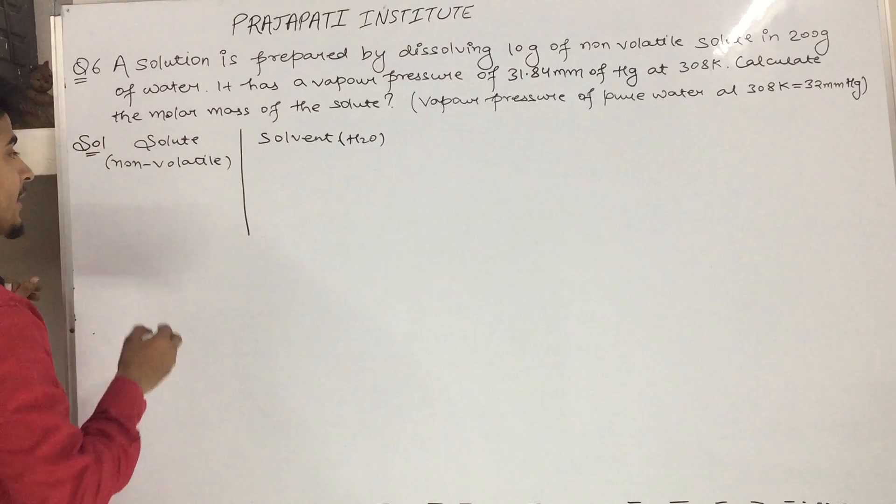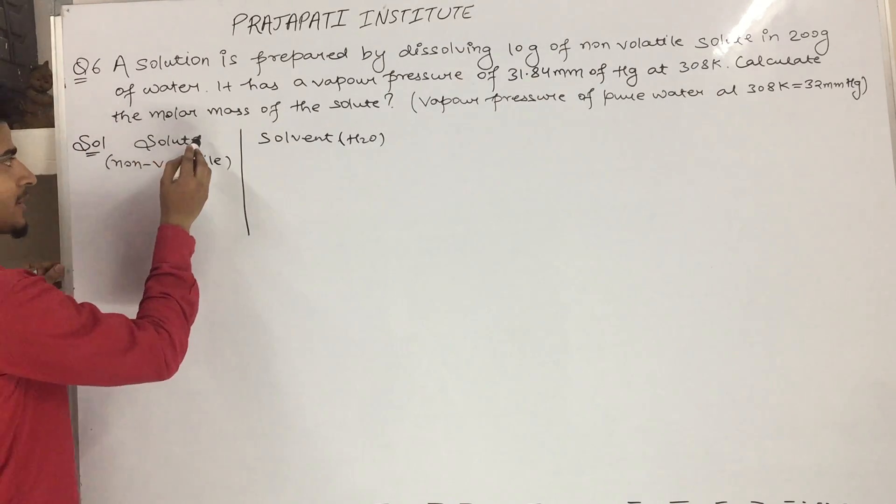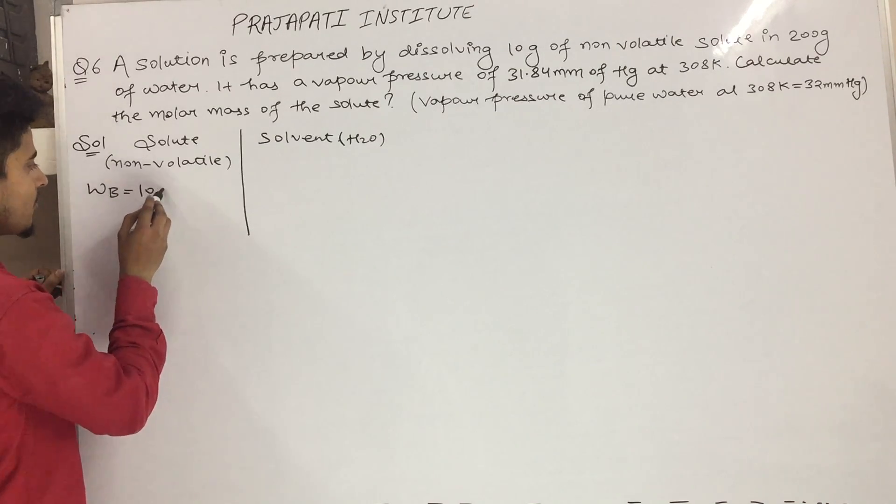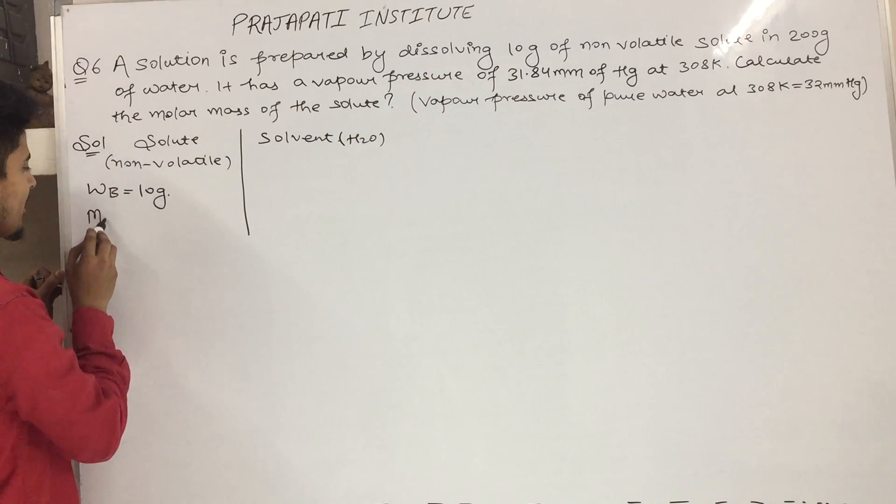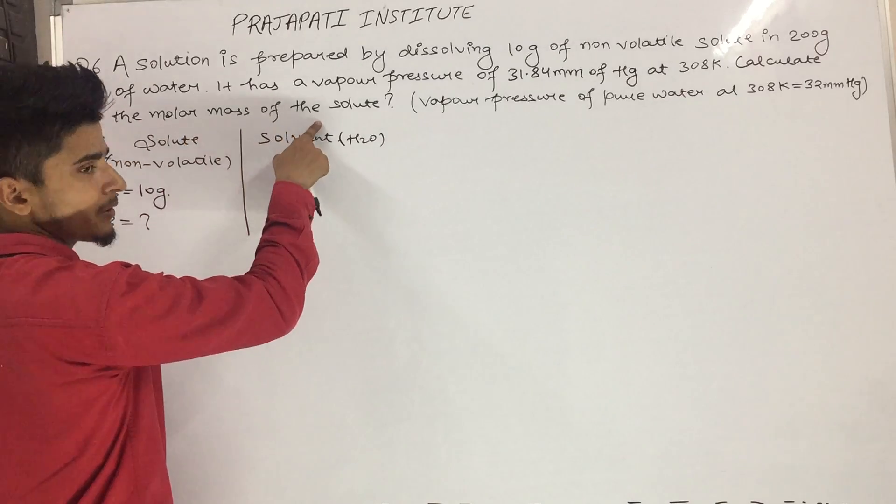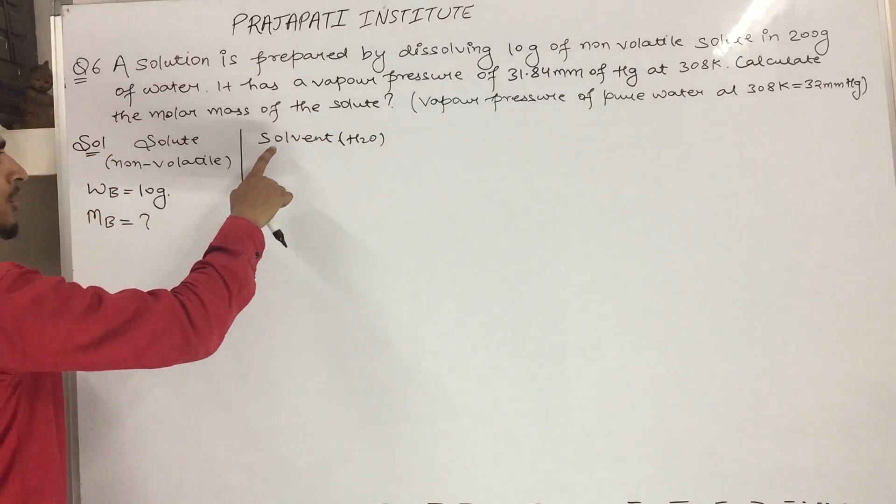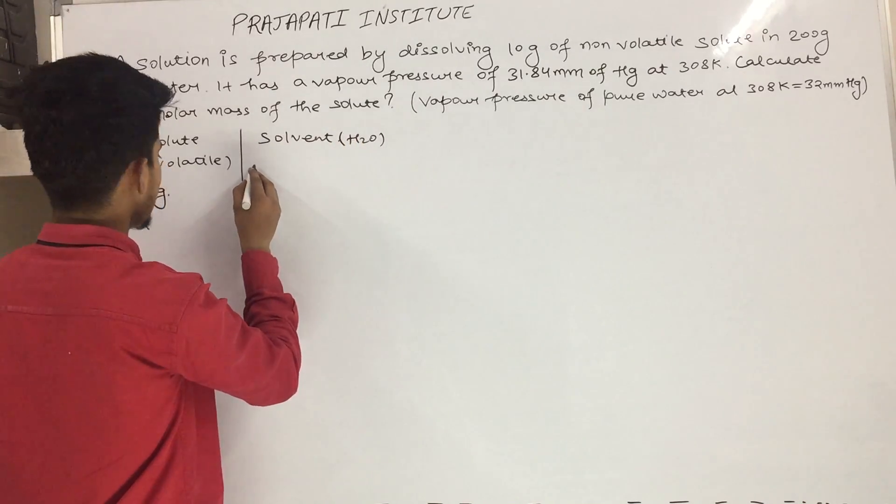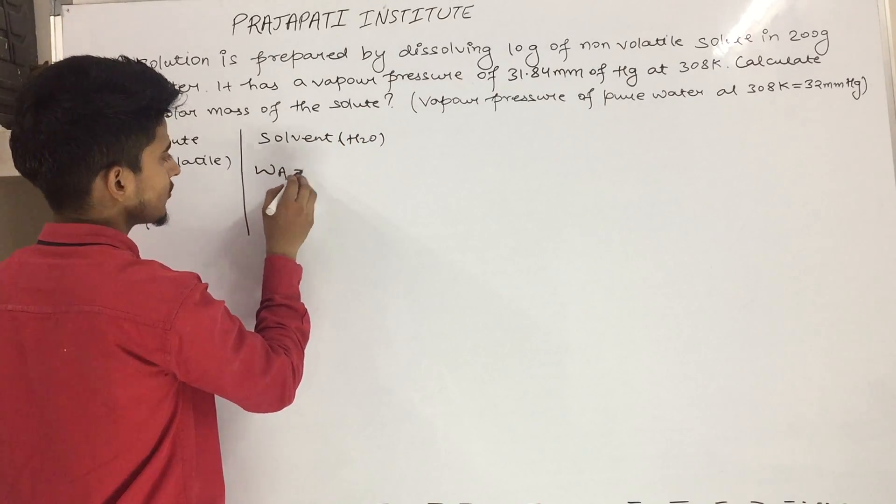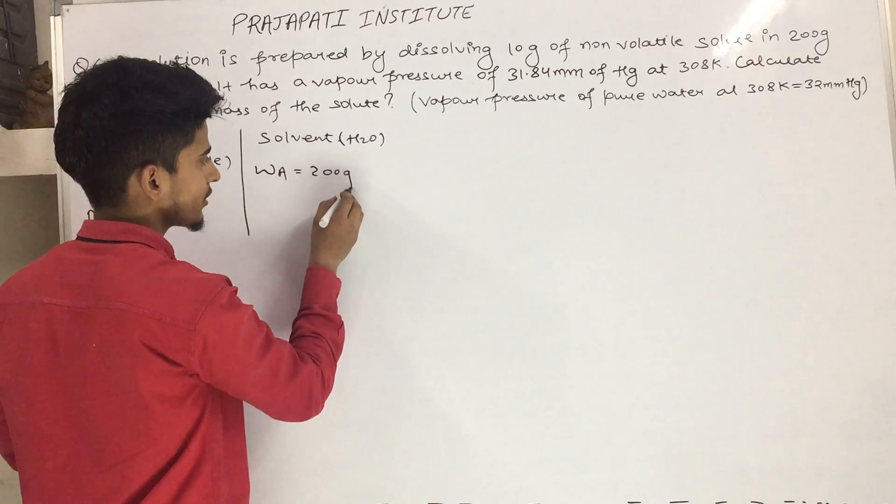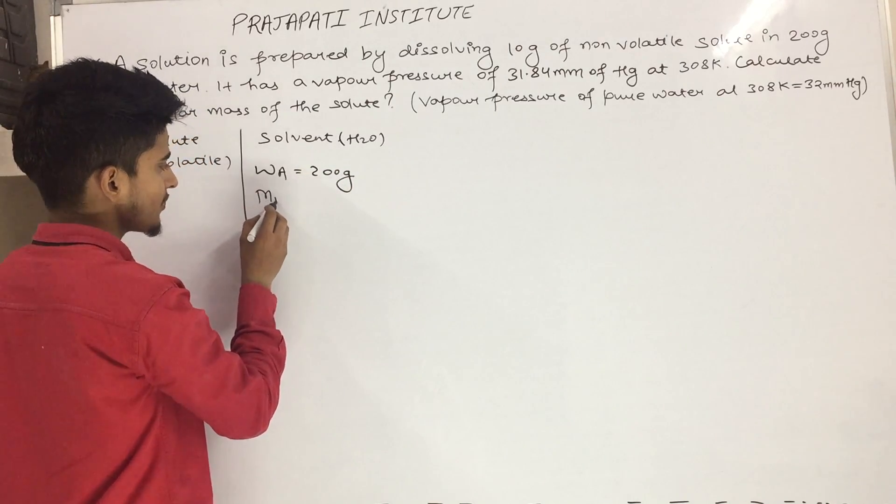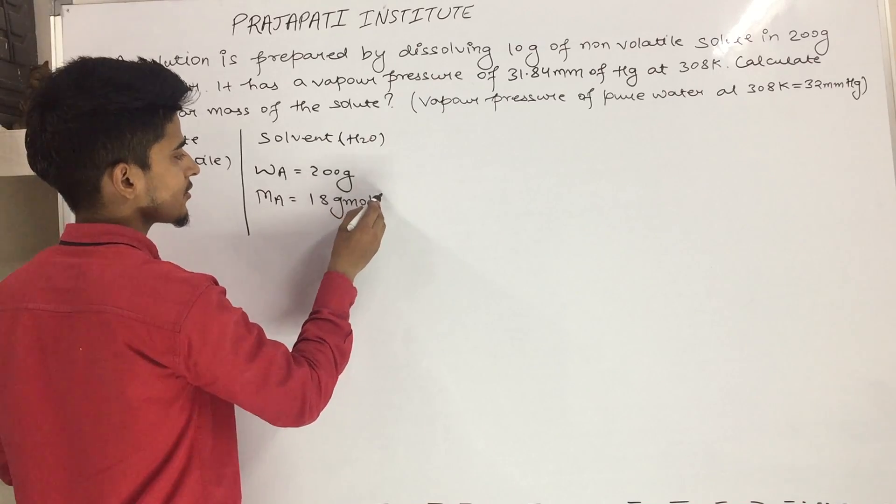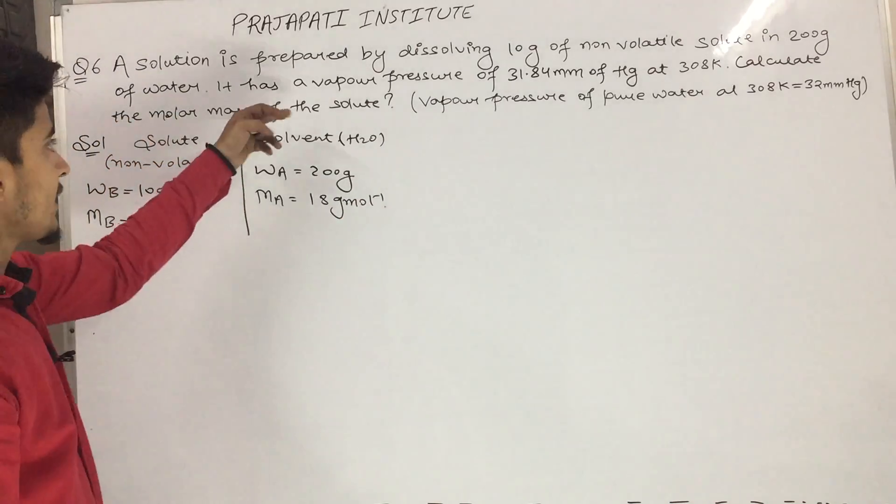Mass of solute, we represent as wb, is 10 grams. Molar mass of solute mb we need to finally calculate. Mass of solvent is 200 grams. Molar mass of water is 18 g/mol.